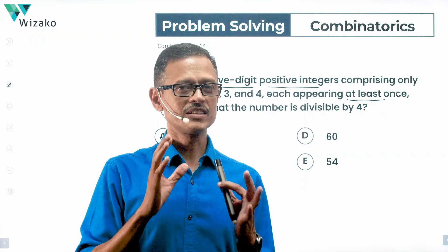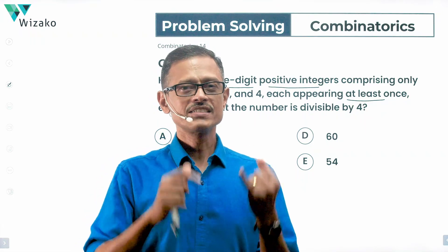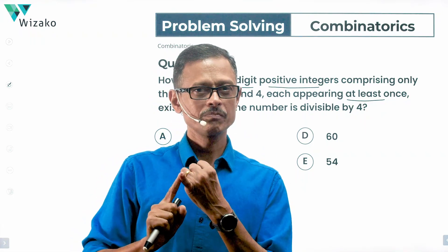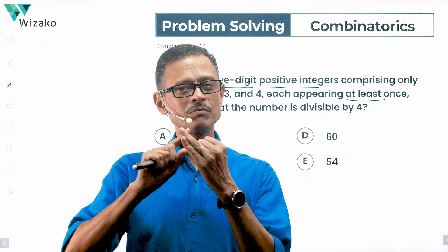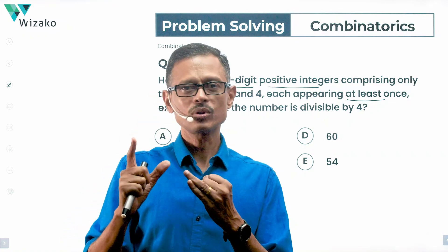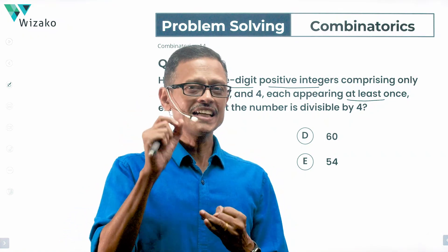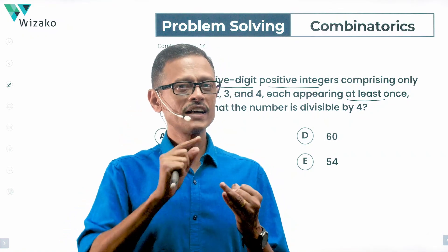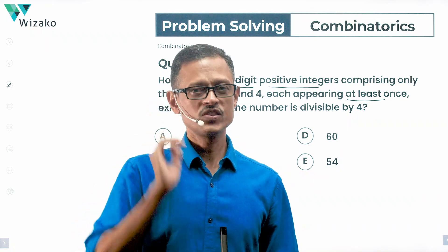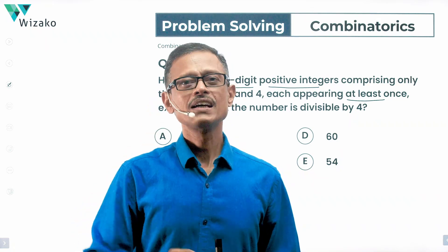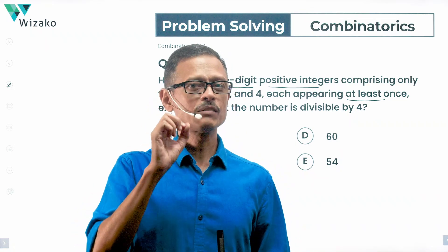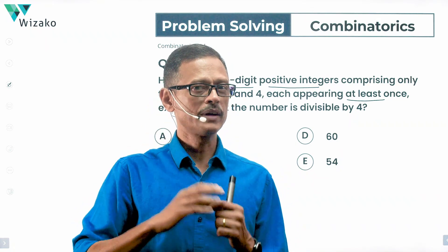So, the following things have been told about these numbers: these numbers should be 5-digit positive integers. They should comprise only the digits 1, 2, 3, 4, with the condition that each of these digits should appear at least once. And lastly, these numbers should be divisible by 4.